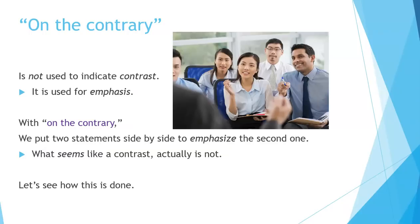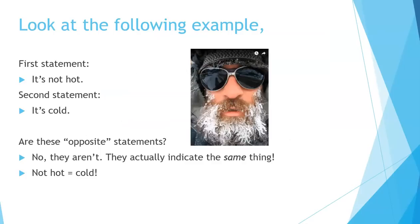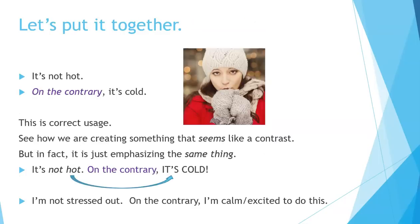What's wrong with this? 'On the contrary' is not used to indicate contrast — it is used for emphasis. With 'on the contrary,' we put two statements side by side to emphasize the second one. What seems like a contrast actually is not. For example: 'It's not hot. On the contrary, it's cold.' These statements actually indicate the same thing — not hot equals cold. See how we create something that seems like a contrast but is really just emphasizing the same idea.